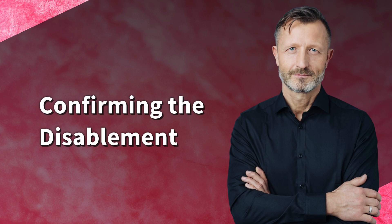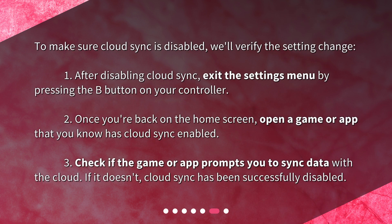Confirming the disablement. To make sure CloudSync is disabled, we'll verify the setting change. After disabling CloudSync, exit the Settings menu by pressing the B button on your controller. Once you're back on the home screen, open a game or app that you know has CloudSync enabled. Check if the game or app prompts you to sync data with the cloud. If it doesn't, CloudSync has been successfully disabled.